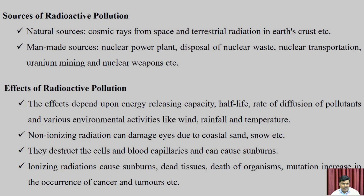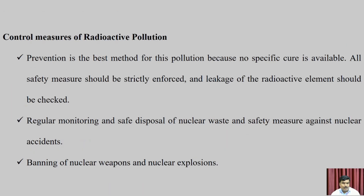Ionizing radiations cause sunburns, death of tissues, death of organisms, mutation, and an increase in the occurrence of cancer and tumors. Control measures for radioactive pollution: prevention is the best method since no specific cure is available. All safety measures should be strictly enforced, leakage of radioactive elements should be checked, regular monitoring and safe disposal of nuclear waste should be ensured, banning of nuclear weapons and nuclear explosions is also necessary.